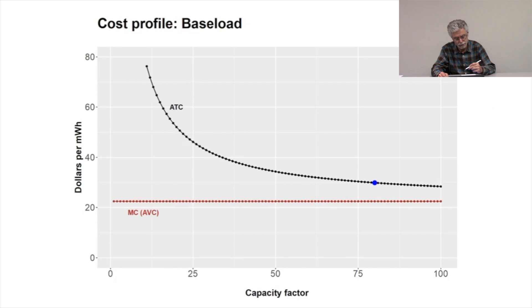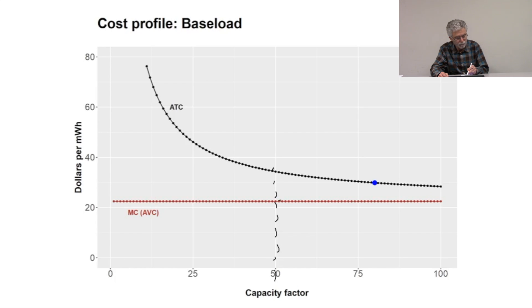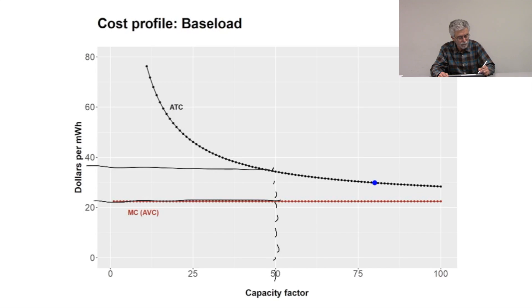Alright, so just to recap — run the plant whenever the price is above average variable cost.